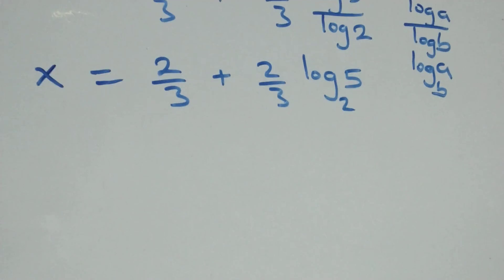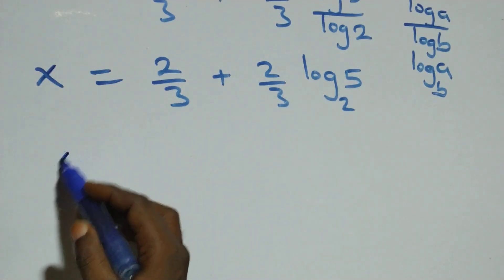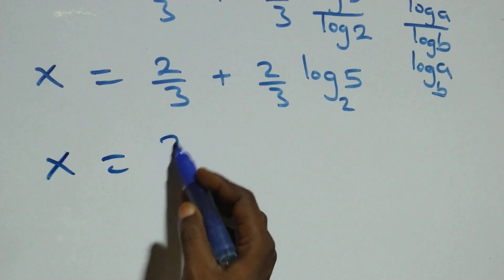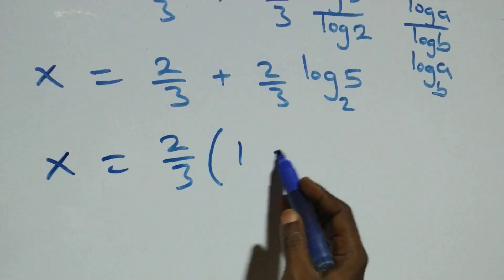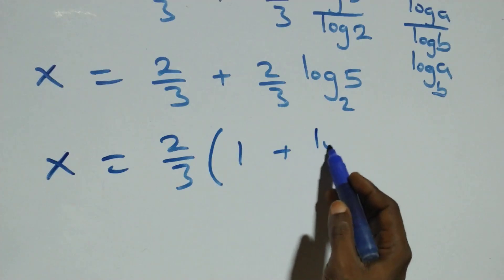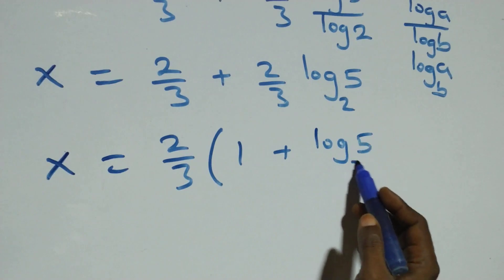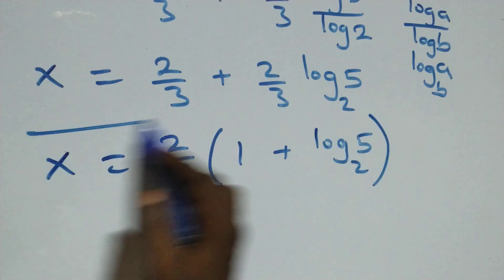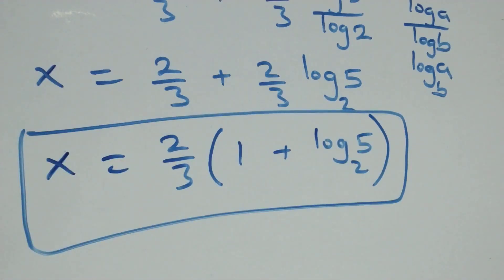Here, 2 over 3 is common. Factoring out, we have x equals 2 over 3 times the bracket one plus log 5 base 2. So the value of x in this problem is x equals 2 over 3 times (1 plus log₂ 5).